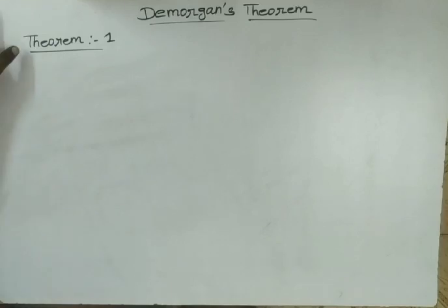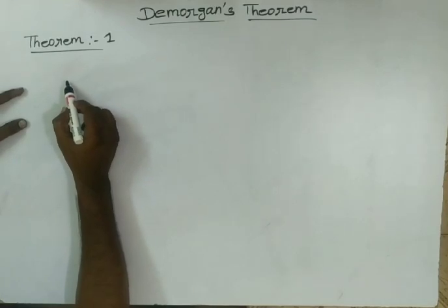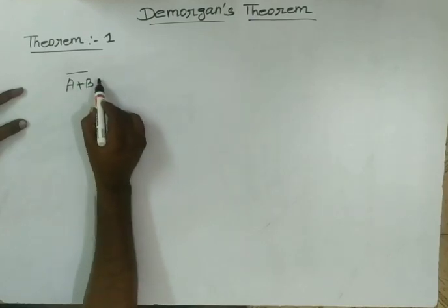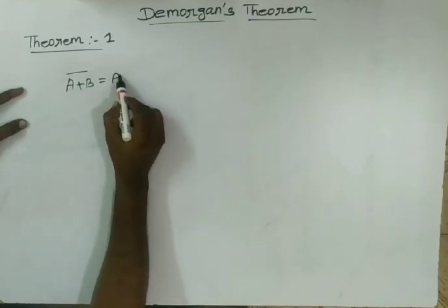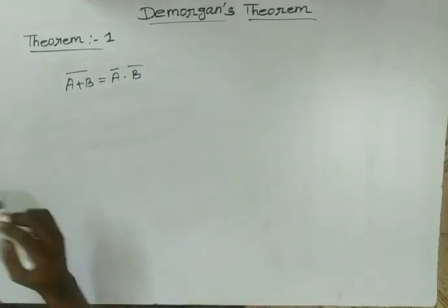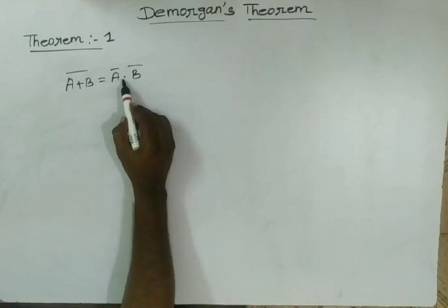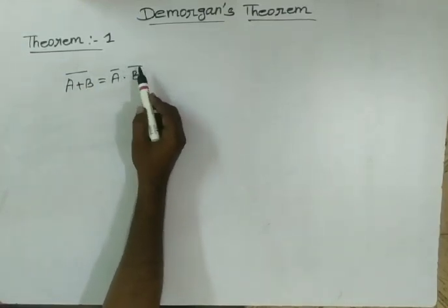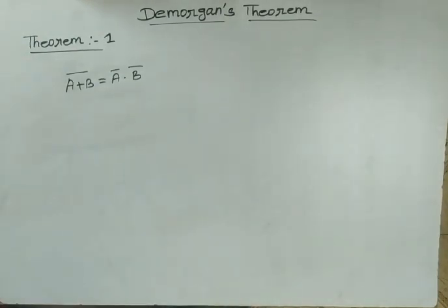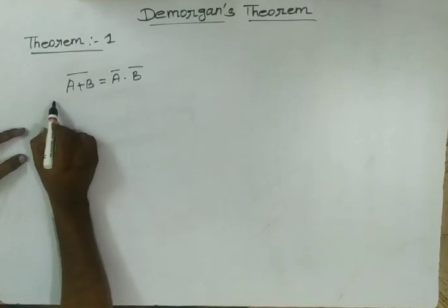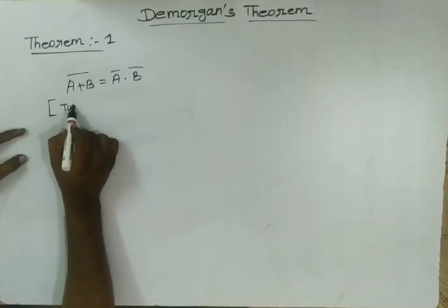First, let us discuss Theorem 1. The first theorem for two variables states: A plus B whole bar equal to A bar dot B bar. This means the left hand side has addition, the right hand side has multiplication. The left hand side has a whole bar, the right hand side has separate bars. This is the two-variable form.